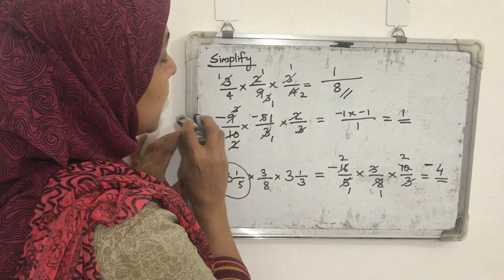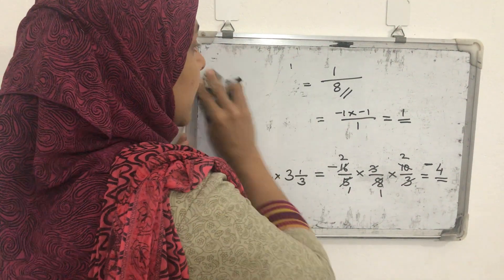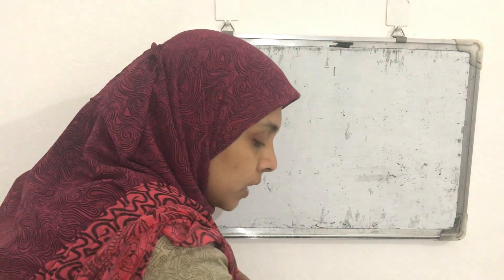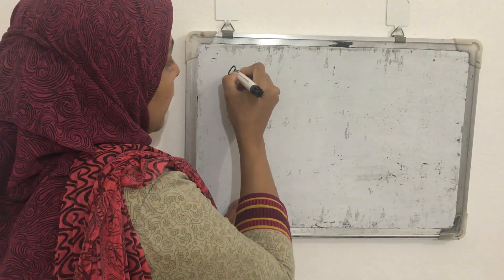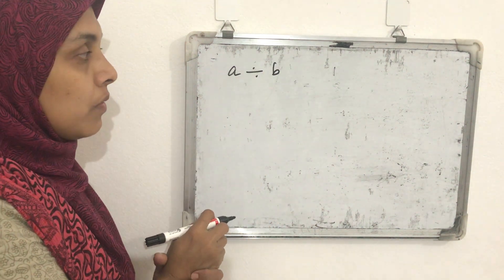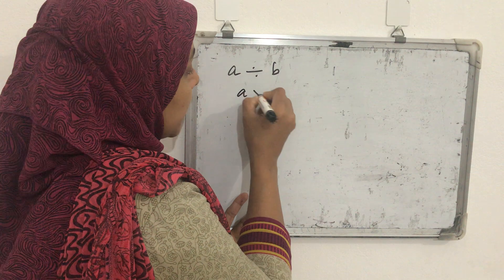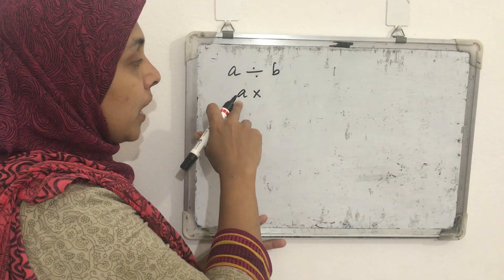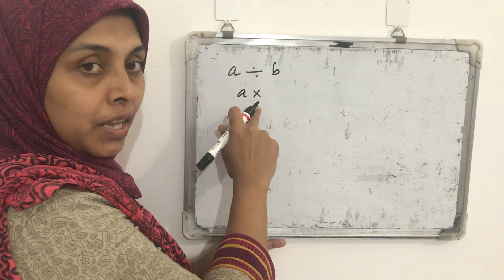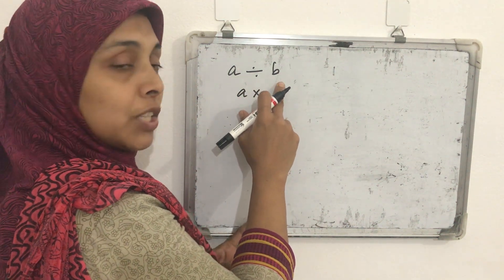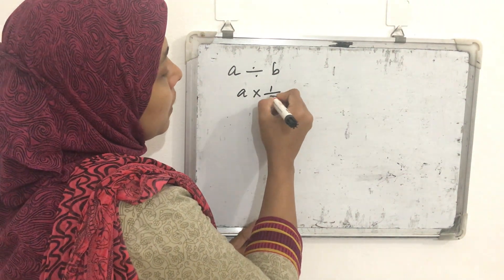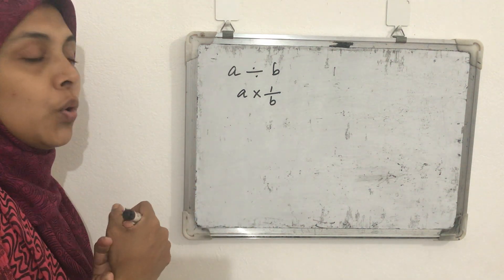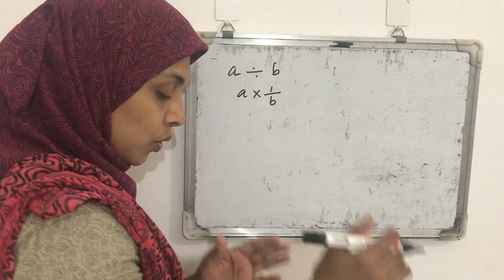Next we discuss division of rational numbers, just like division of fractions or division of integers. If we are dividing A by B, instead of dividing, A is multiplied with the multiplicative inverse of the second number. The multiplicative inverse of B is 1/B. We can also call it the reciprocal. So A ÷ B = A × (1/B).